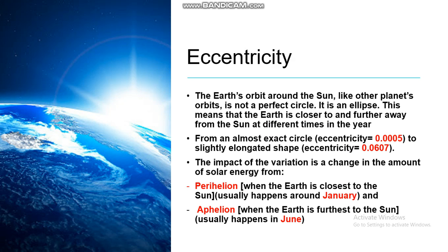The first component in the Milankovitch cycle is eccentricity. The earth's orbit around the sun, like other planets' orbits, is not a perfect circle — it is an ellipse. This means the earth is closer to and further away from the sun at different times in the year. Eccentricity ranges from an almost exact circle at 0.0005 to a slightly elongated shape at 0.0607.